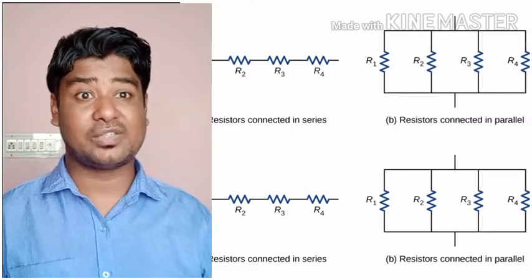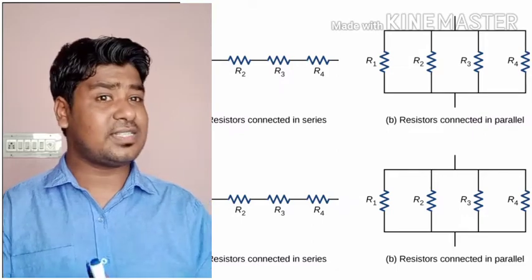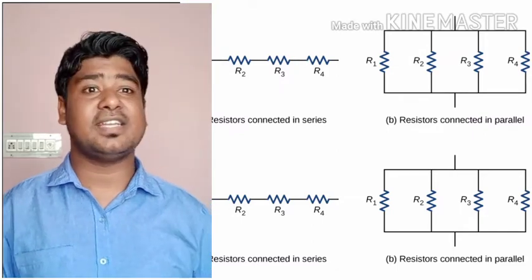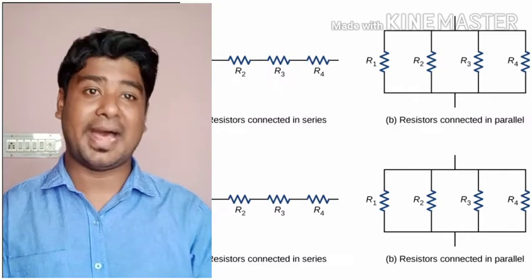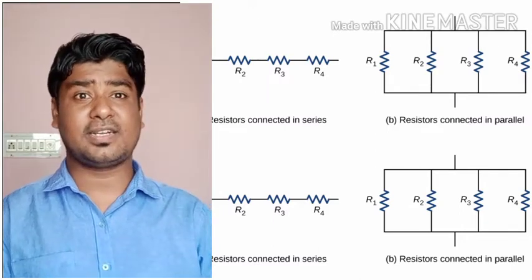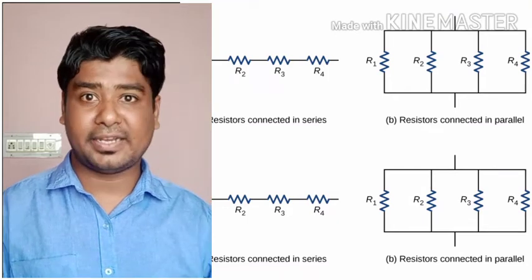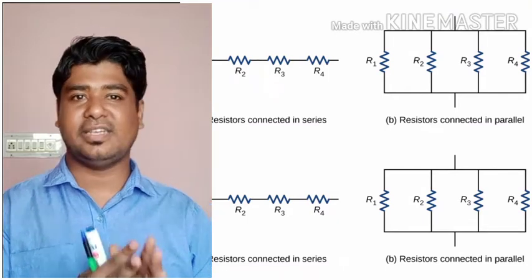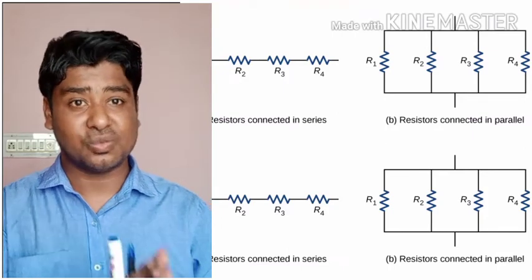What ways do we connect electrical resistors? Resistors are generally connected in two ways: in series and in parallel. We are going to discuss how they are connected and what difference it makes by connecting the resistors in series versus in parallel.